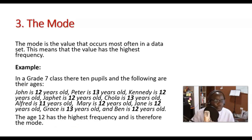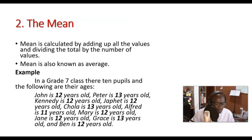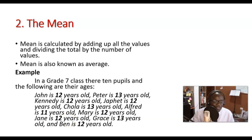Let us move on to the mode. The mode is the value that occurs most often in a data set — this means the value with the highest frequency. For example, looking back at the ages list, you can see that 12 appears a lot of times; it is the one which appears most frequently. In other words, 12 has the highest frequency, so the mode is 12.